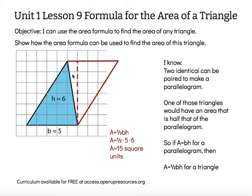And then find half of that. So the area of this blue triangle right here would be 15 square units because it would be half the area of this parallelogram or the rectangle that could be created from decomposing and rearranging with two identical triangles.